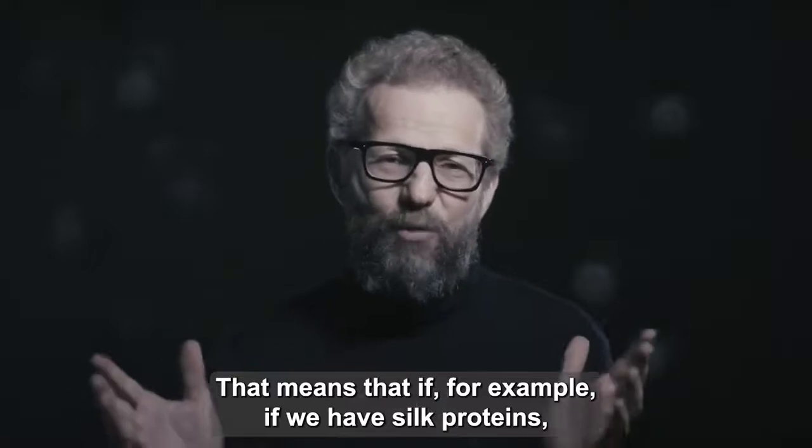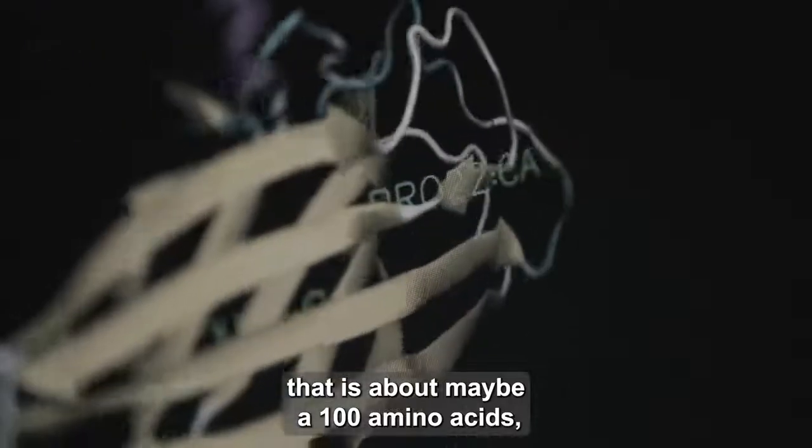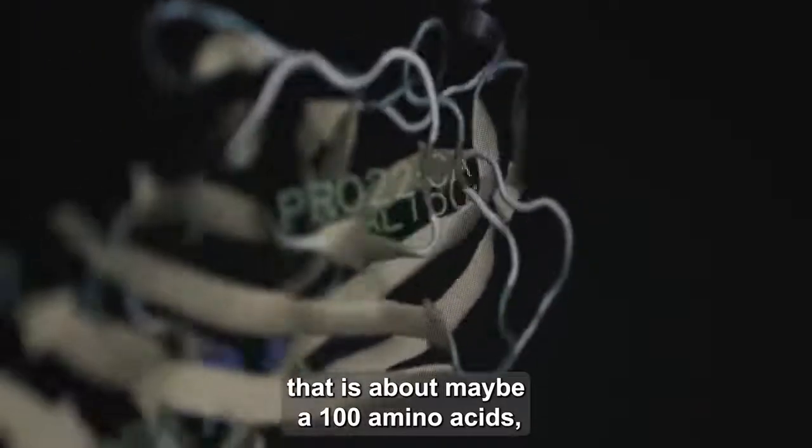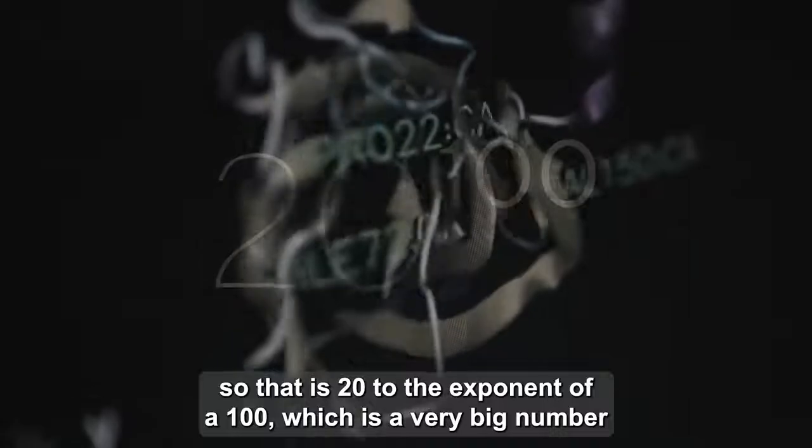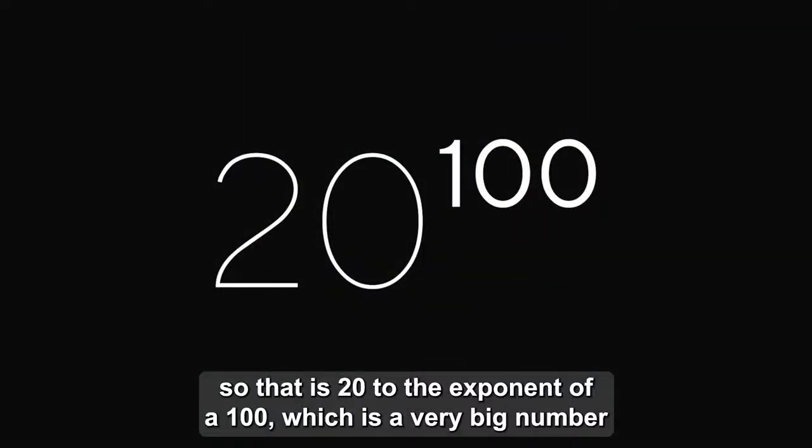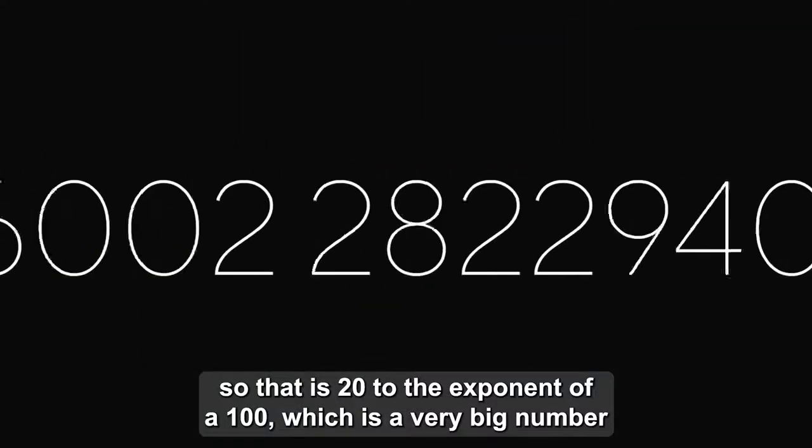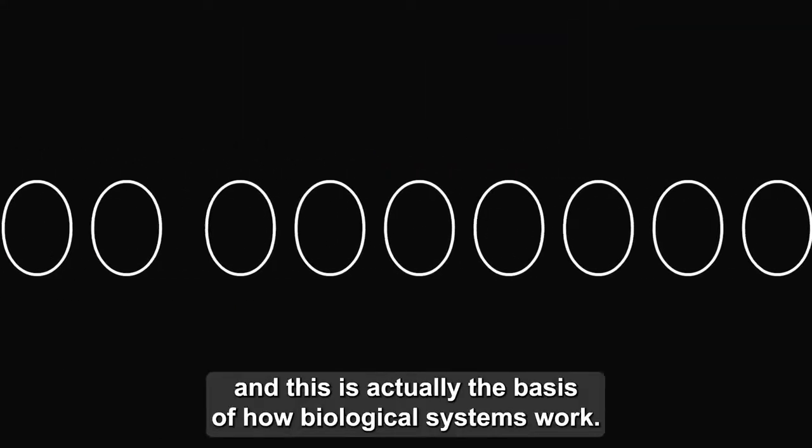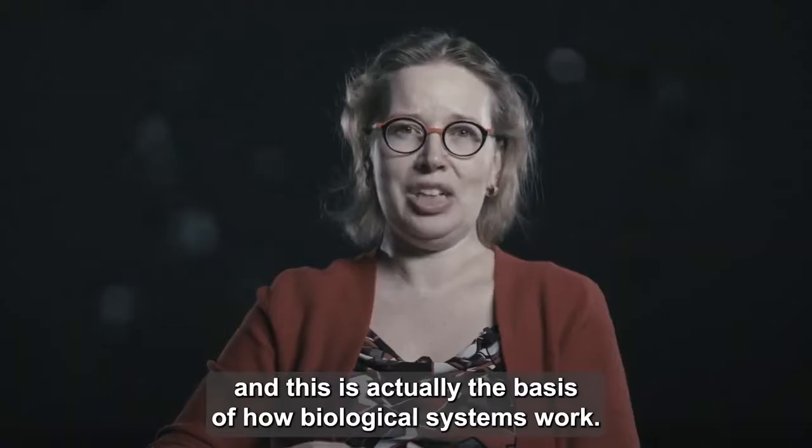That means that, for example, if we have silk proteins, there is about maybe 100 amino acids. So that is 20 to the exponent of 100, which is a very big number. And this is actually the basis of how biological systems work.